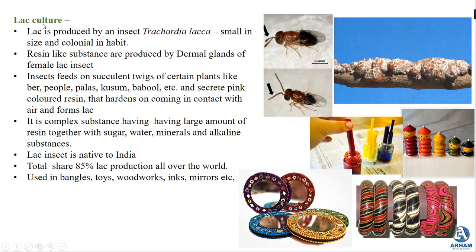The last part of animal husbandry is lac culture. Lac is produced by an insect called Tachardia lacca, which is small-sized and colonial in habit. A resin-like substance is produced by the dermal glands of the female lac insect. These insects feed on the succulent twigs of certain plants like ber, peepal, palash, kusum, and baboon. They secrete a pink-colored resin which hardens on contact with air to form lac.